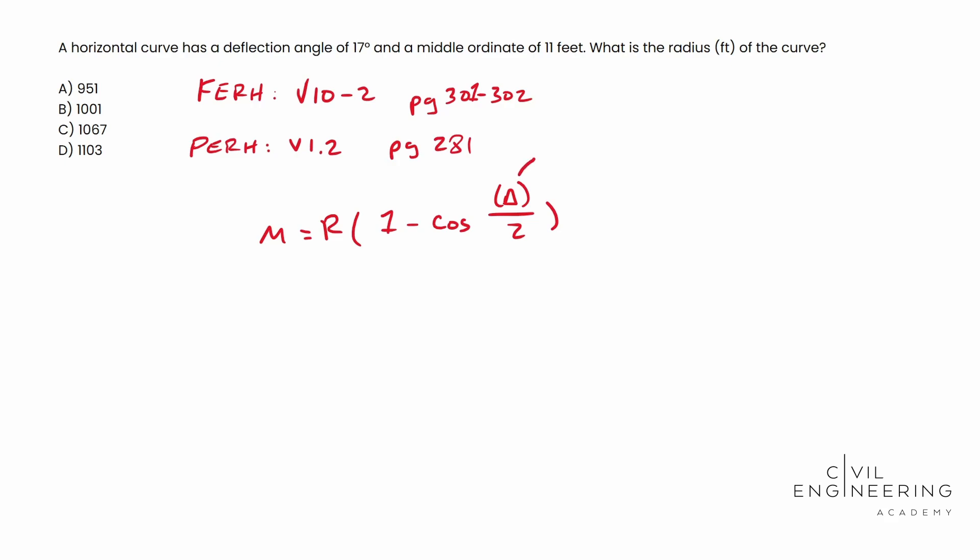And so if you're taking the FE, this right here is actually going to be called I, it's technically called the intersection angle as well. So keep that in mind. I'm going to solve this through like a PE problem, but if you're taking the FE, don't get confused. Delta and I is the same thing. So what we're going to do is we're going to go ahead and solve for R now.